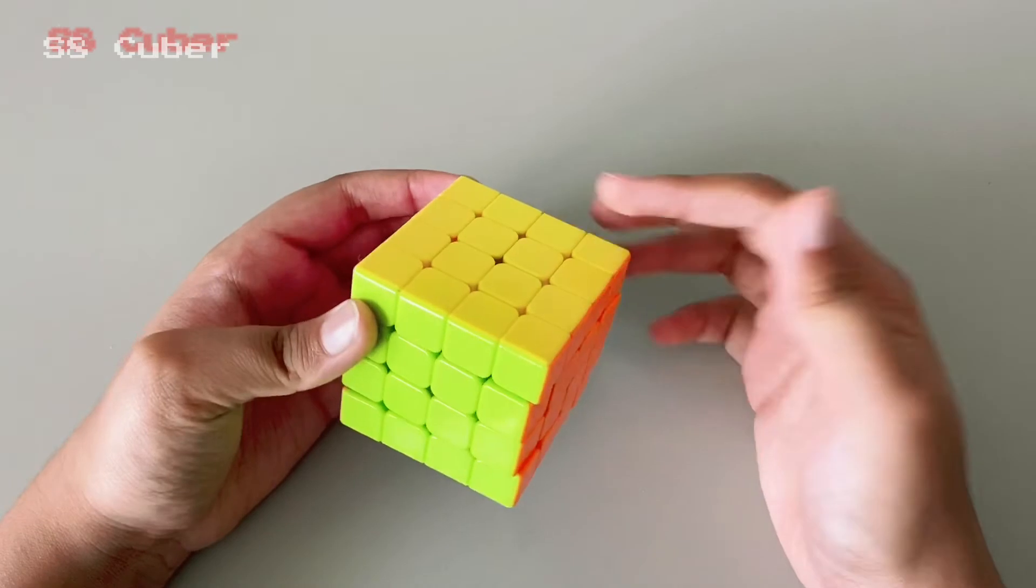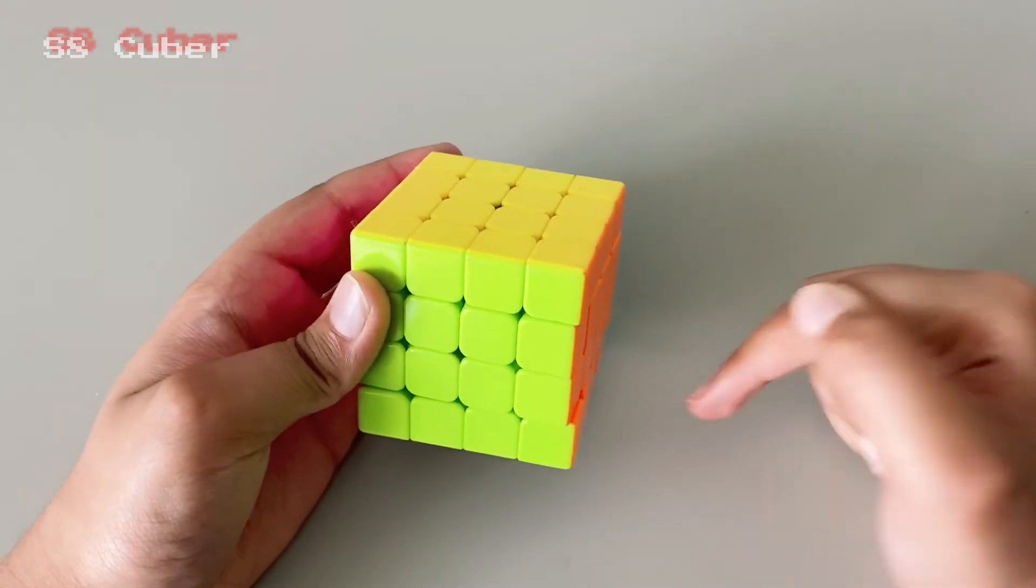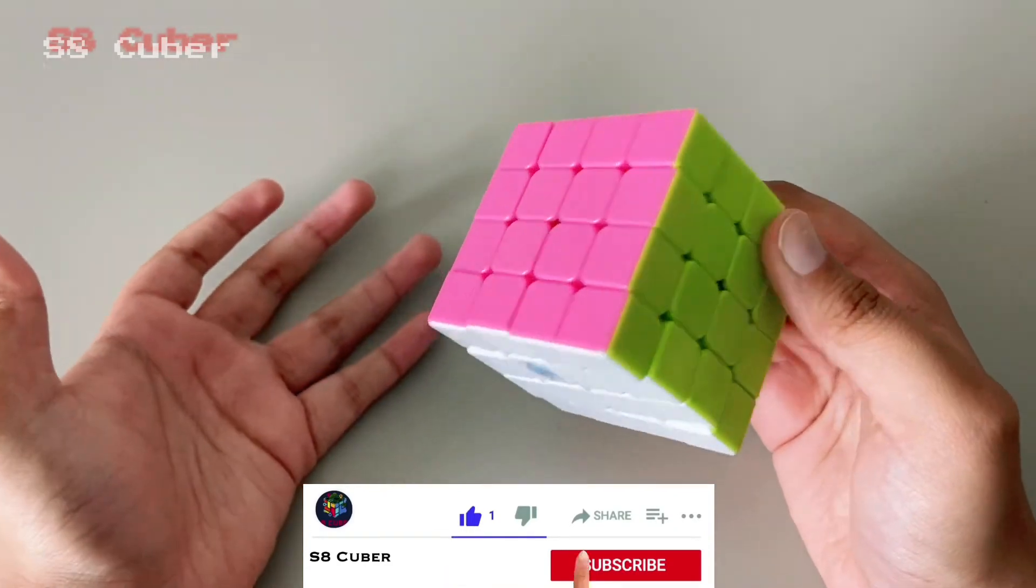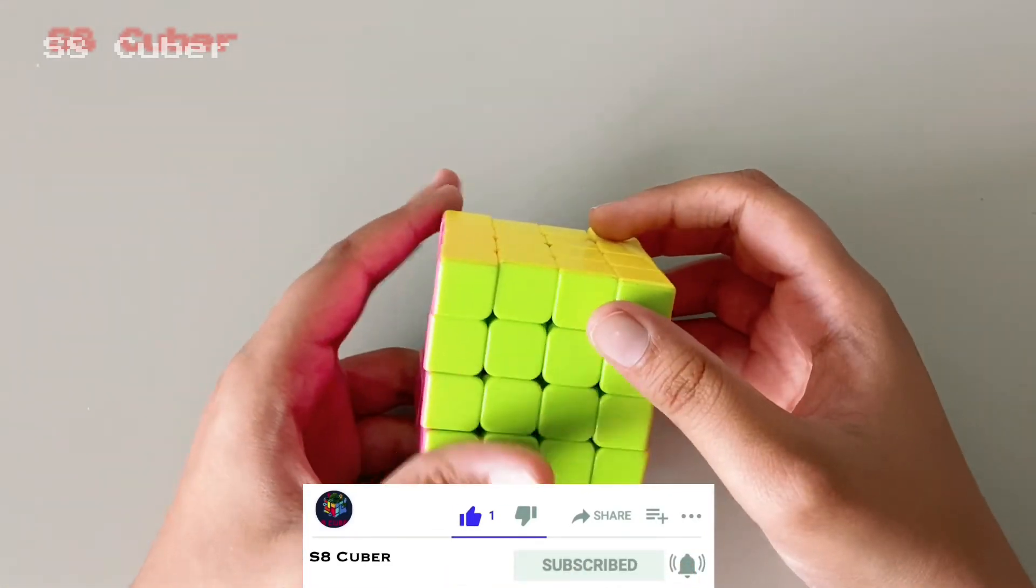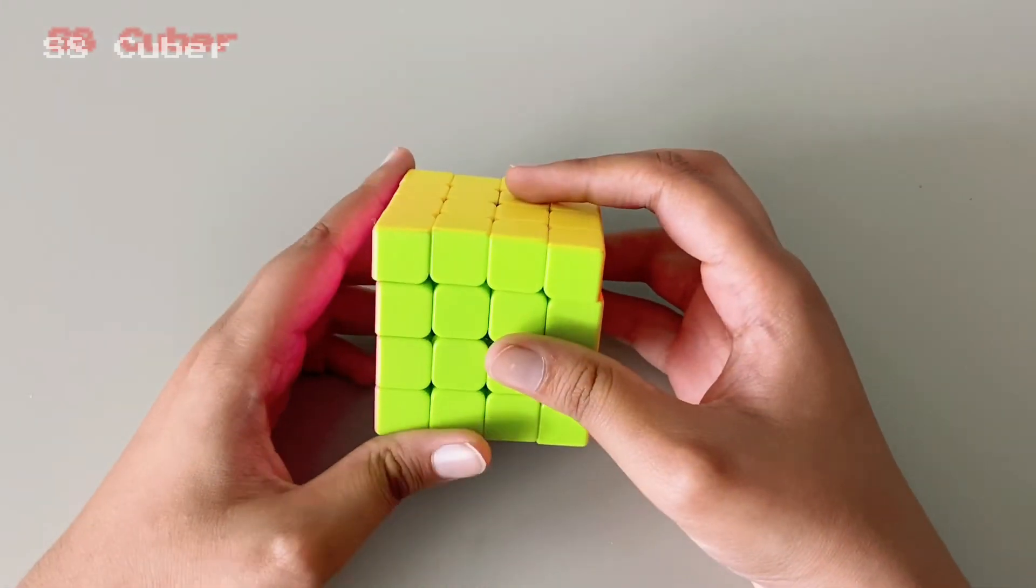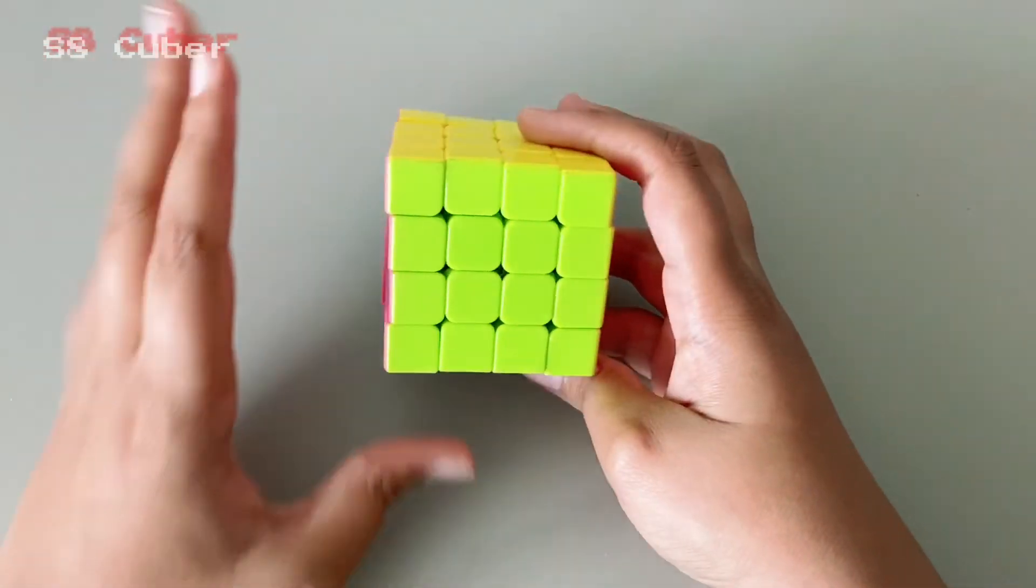Now, if you don't know how to solve this upper layer, you can go to the link in the description below. And if you don't know how to solve the 4x4, or you got it shuffled while doing the algorithm, all three parts are in the description below. You can check them out, but for now, bye bye.